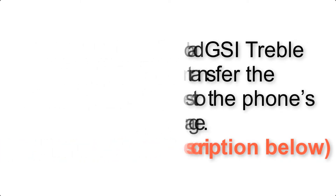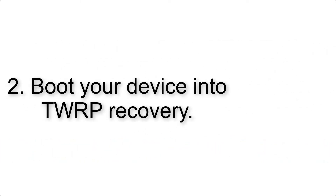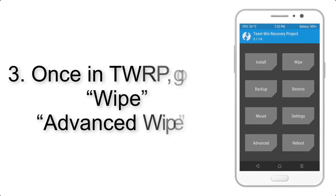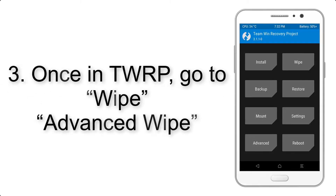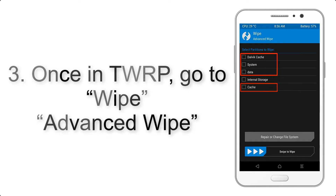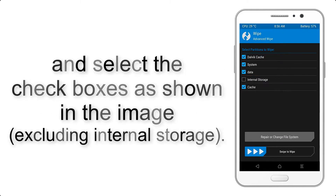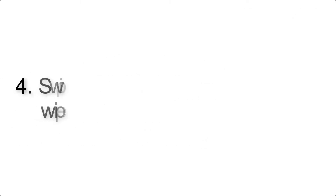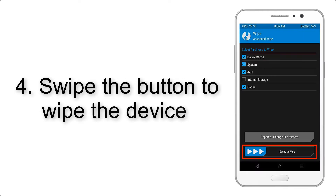Step 2: Boot your device into TWRP recovery. Once in TWRP, click on Wipe, then Advanced Wipe, and select the checkboxes as shown in the image, excluding internal storage.